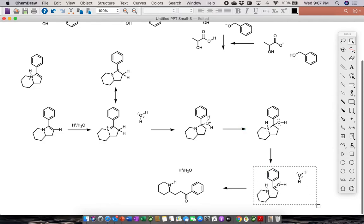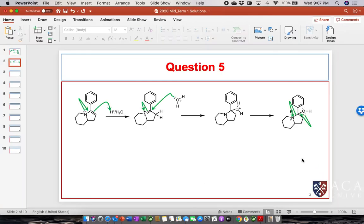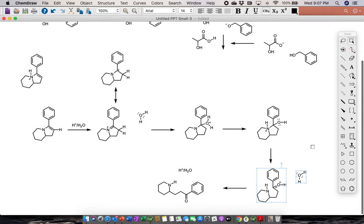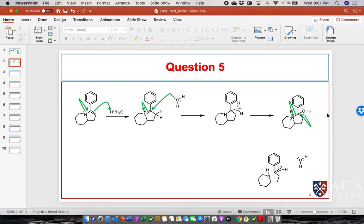When we do that, we get this species. It's not very pretty the way I've drawn it, but this is our amino ketone. There we go. So now we have basically our finished product, and all we have to do is remove that final proton.